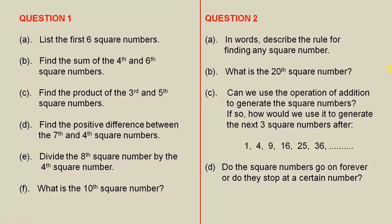Question 1. List the first six square numbers. Find the sum of the fourth and sixth square numbers. Find the product of the third and fifth square numbers.